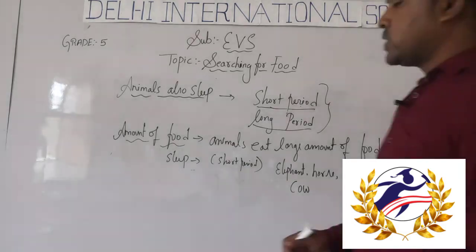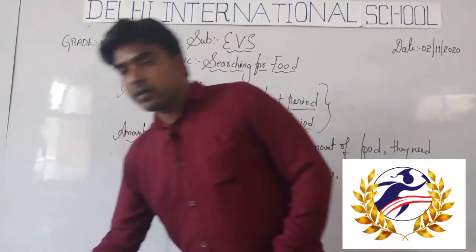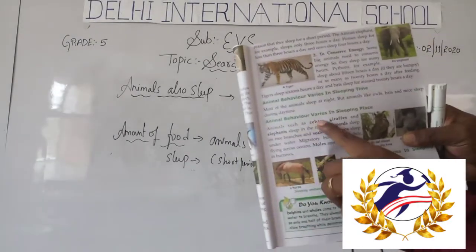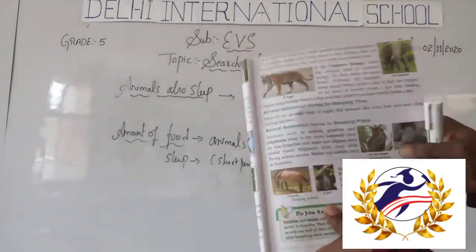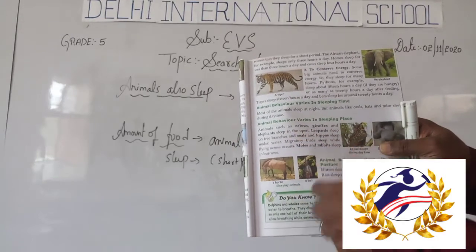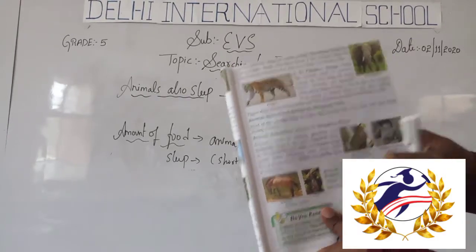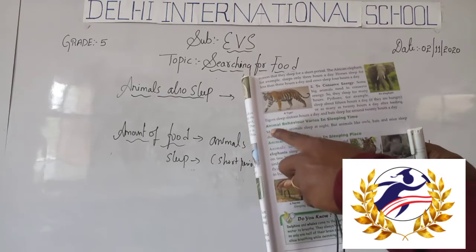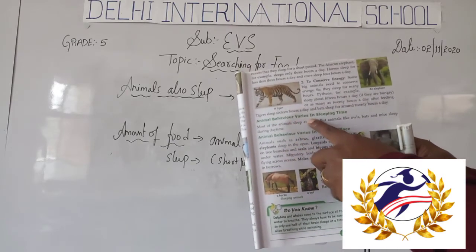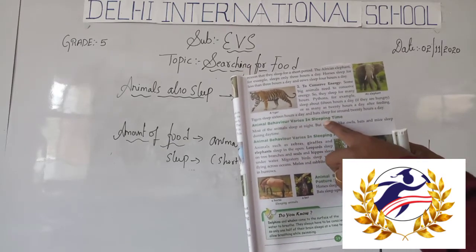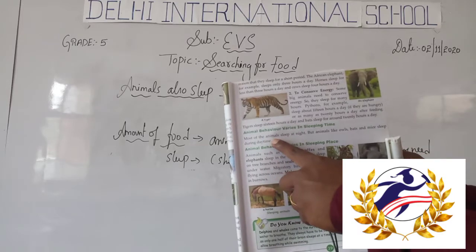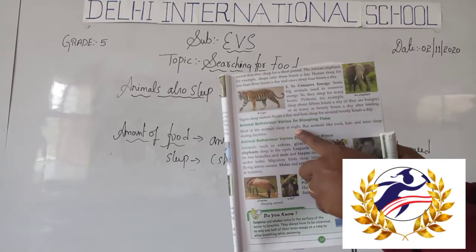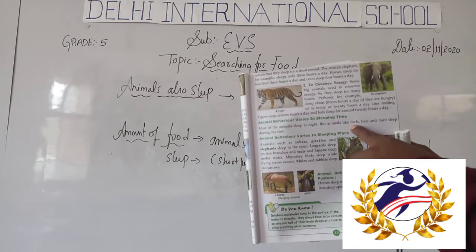In your textbook, page number 39, they have given information about animals' behavior in sleeping places — how and where animals sleep. Most animals sleep at night, but animals like owls, bats, and mice sleep during the daytime.